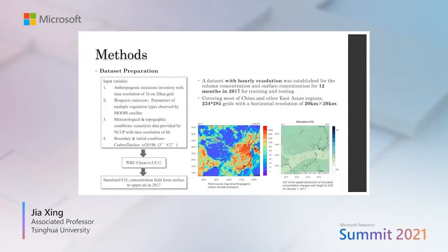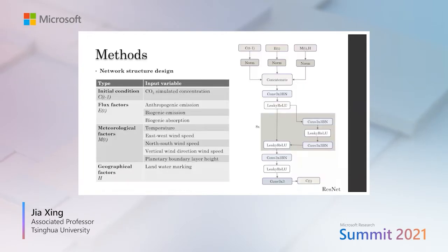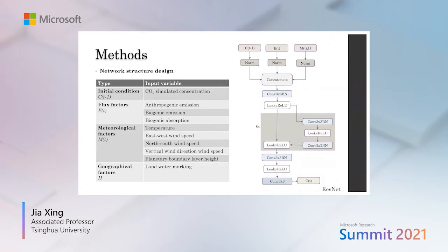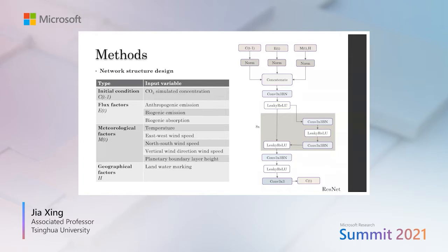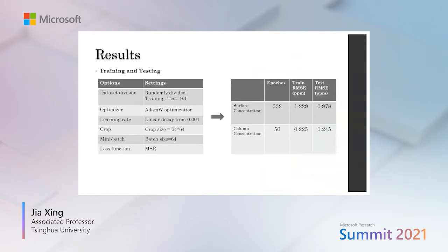The network structure uses ResNet as our backbone. We input all features into the model, including initial conditions, flux factors (emissions), meteorology factors which also influence CO2 concentration, and geographic factors. All variables are input as features to train the model to predict concentration as the label.